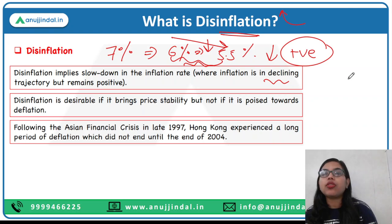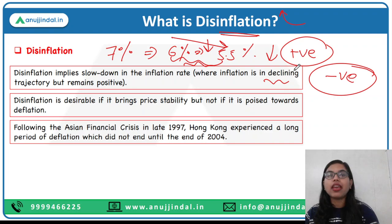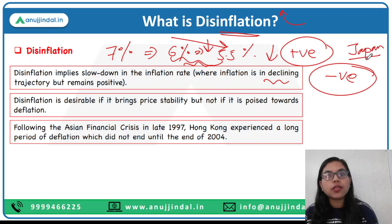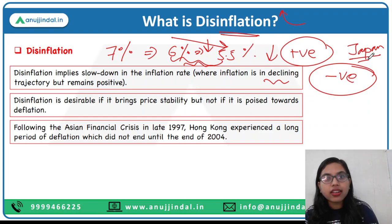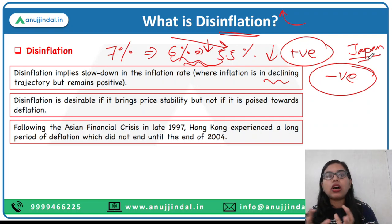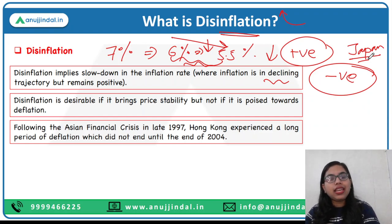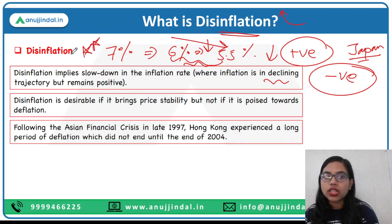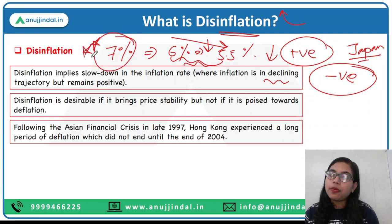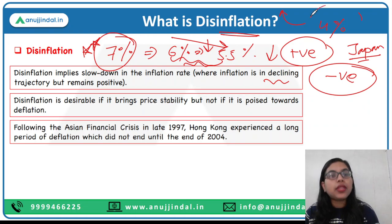In deflation, the inflation rate becomes negative — which is the case with certain countries such as Japan. Japan faces the problem of deflation; the inflation rate is always negative and they are always trying to get away from deflation. Disinflation is actually a good thing, and this is what our government is trying to achieve. Currently, inflation in India is around seven to seven point four percent, and we want to reduce it to four percent.